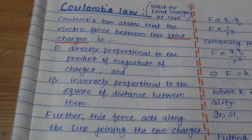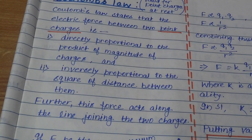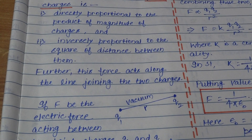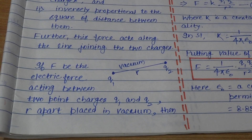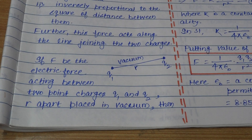The statement of Coulomb's law is: the electric force between two point charges is directly proportional to the product of the magnitudes of the charges and inversely proportional to the square of the distance between them. Further, this force acts along the line joining the two charges.